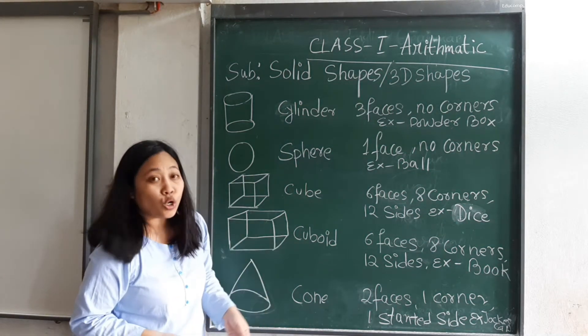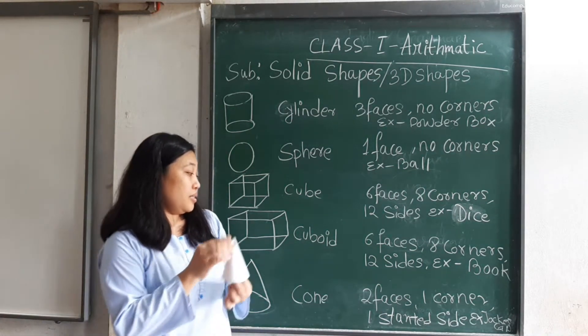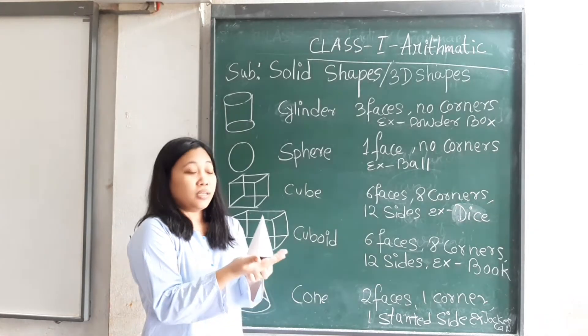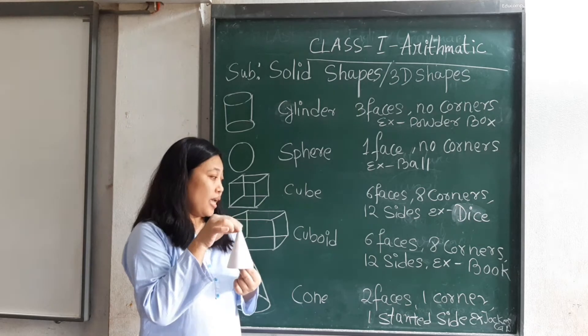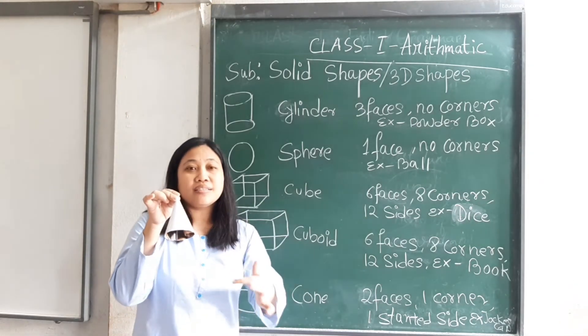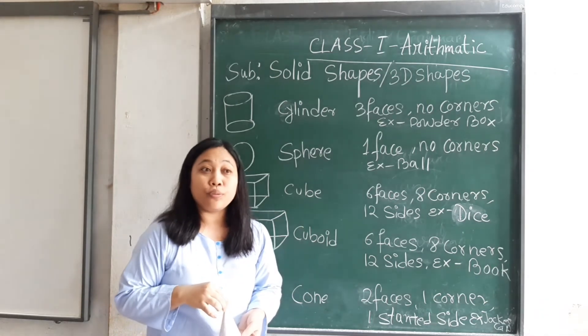Lastly, cone. A cone has two faces: one flat face, second a curved face. One corner and one slant side. Example: you can take ice cream cone or party cap.